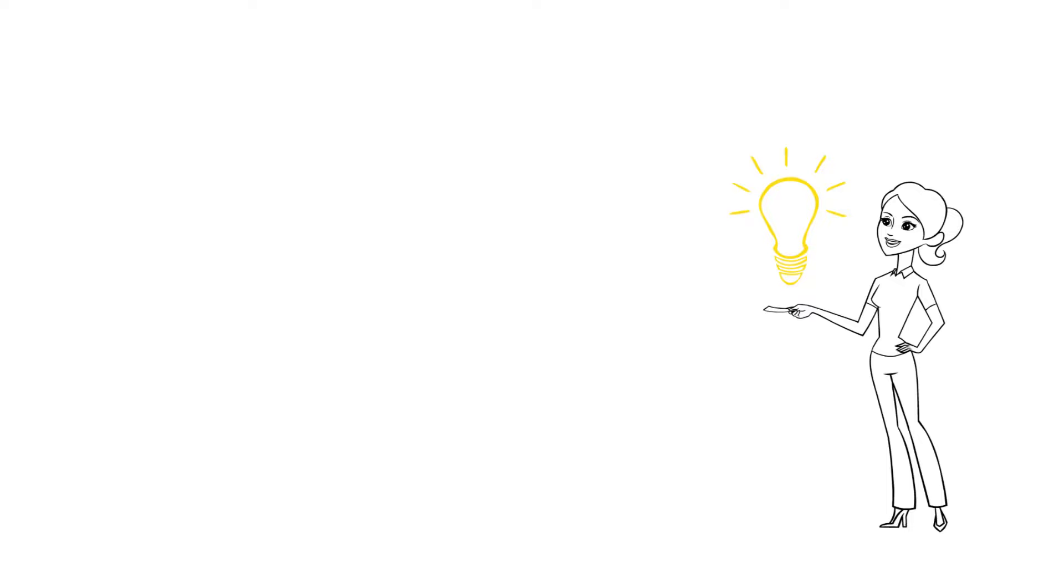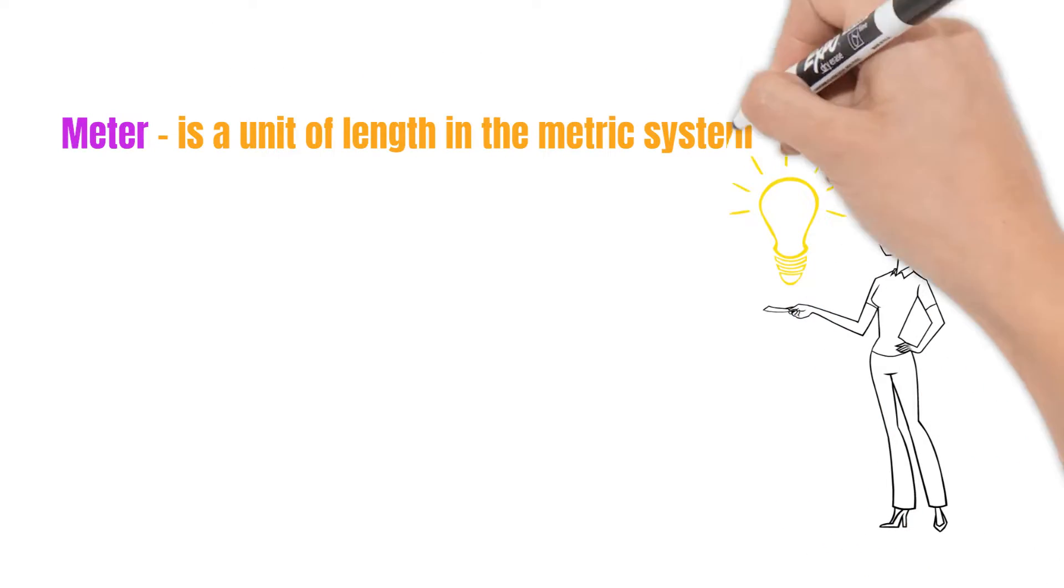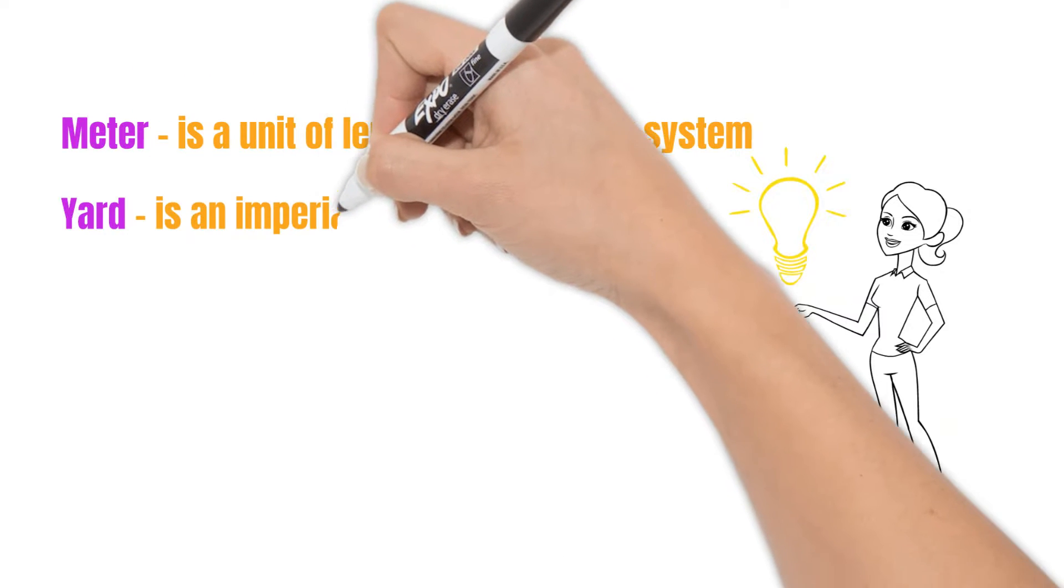First, let's clarify what we're dealing with. A meter is a unit of length in the metric system and is the base unit for length and distance. On the other hand, a yard is an imperial unit of length.